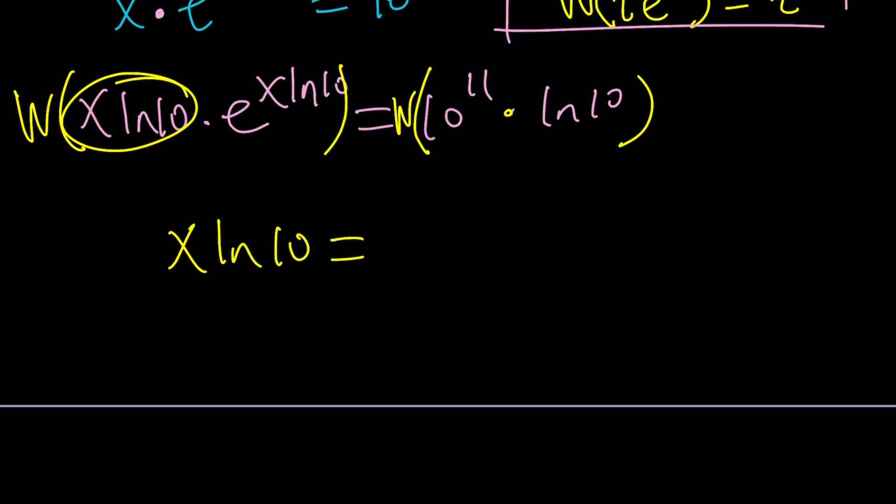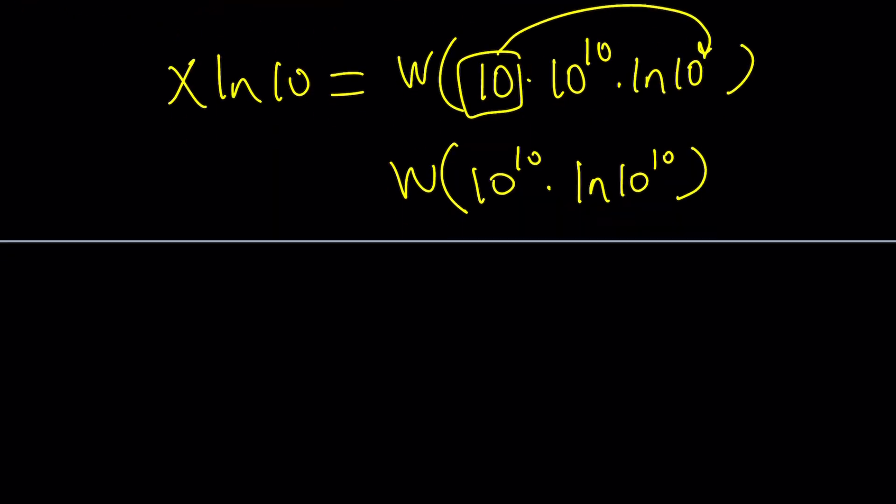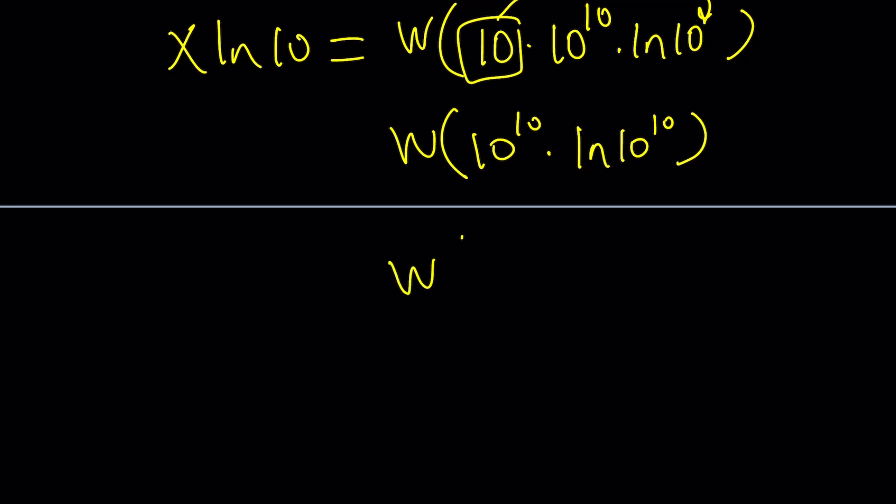But we still have to worry about this one, right? So how do I put it in a nice form? And you can actually do this. 10 to the power 11 is actually 10 times 10 to the power 10. So let's go ahead and do this. 10 times 10 to the power 10 times ln 10. So go ahead and take this 10, bring it over here. You're going to get 10 to the 10 times ln 10 to the 10. And here's where the hocus pocus comes in. We're going to write this as ln 10 to the 10 times e to the power ln 10 to the 10.